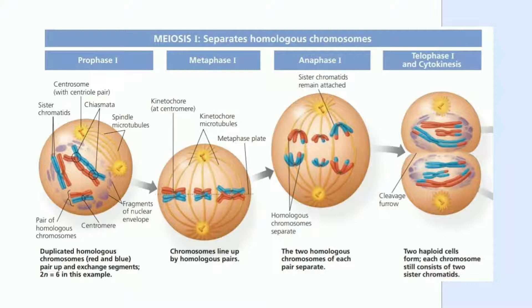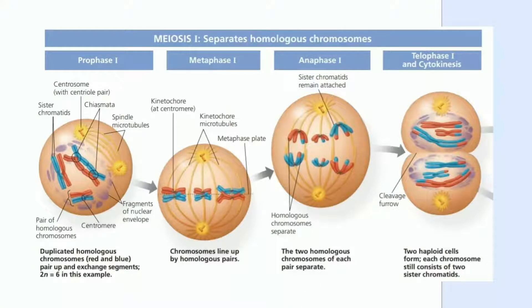Pada telofase I dan sitokinesis, setiap setengah sel memiliki kromosom haploid. Setiap kromosom masih terdiri dari dua sister kromatid. Sitokinesis terjadi bersamaan membentuk dua sel anak haploid. Jadi hasil dari meiosis I adalah dua sel anak yang haploid.